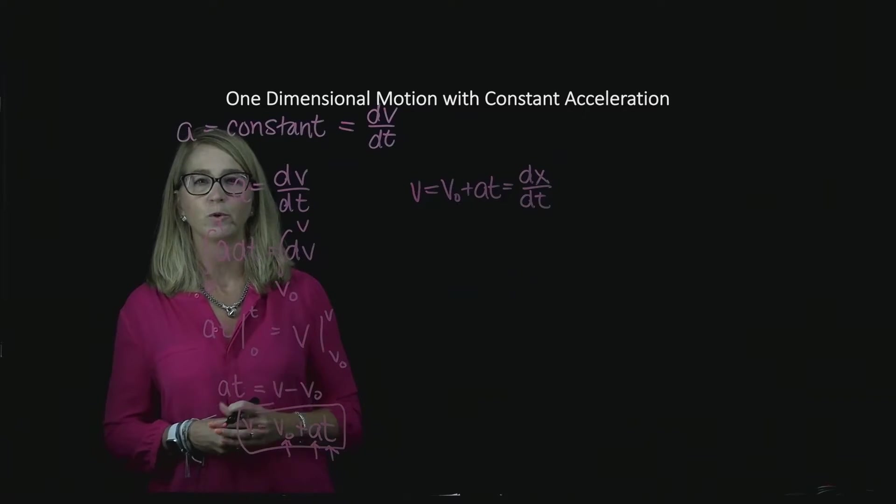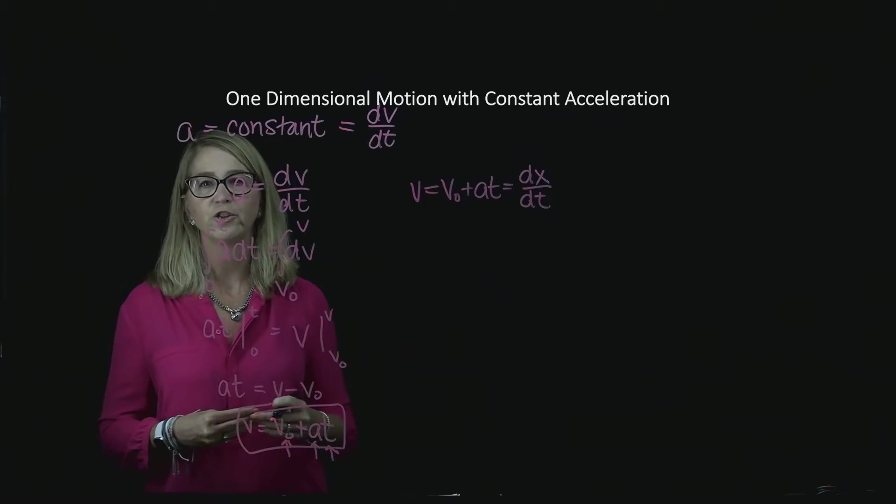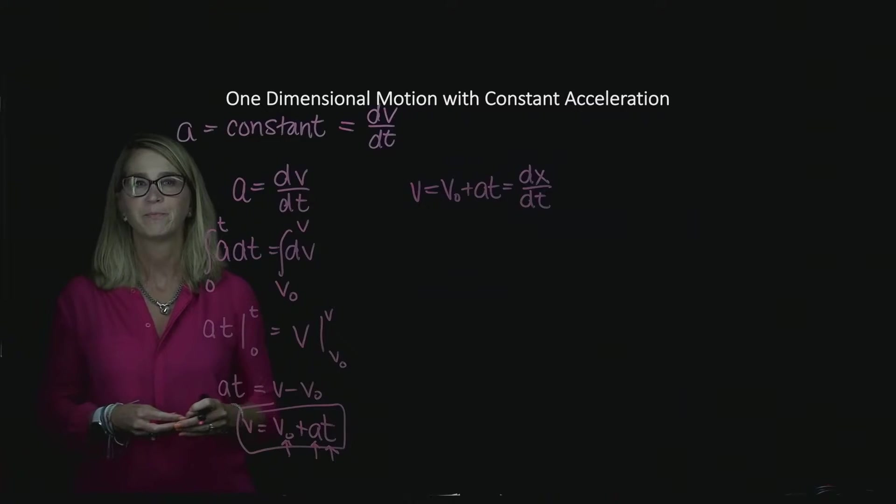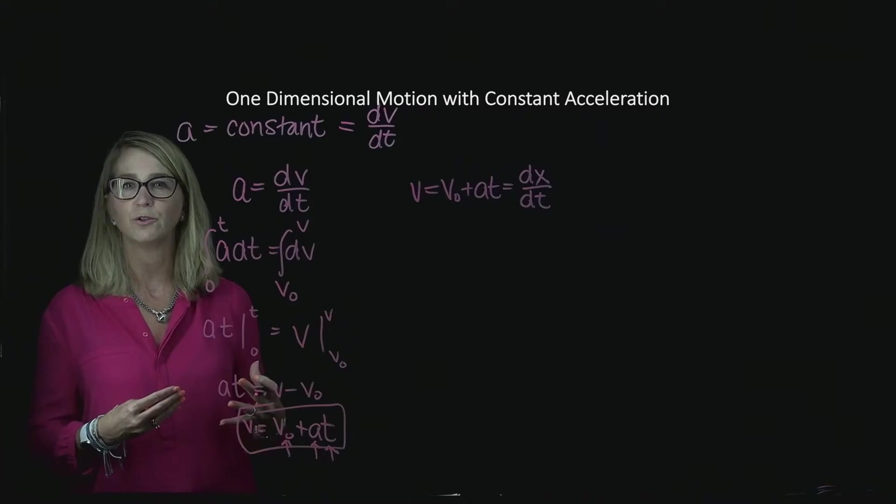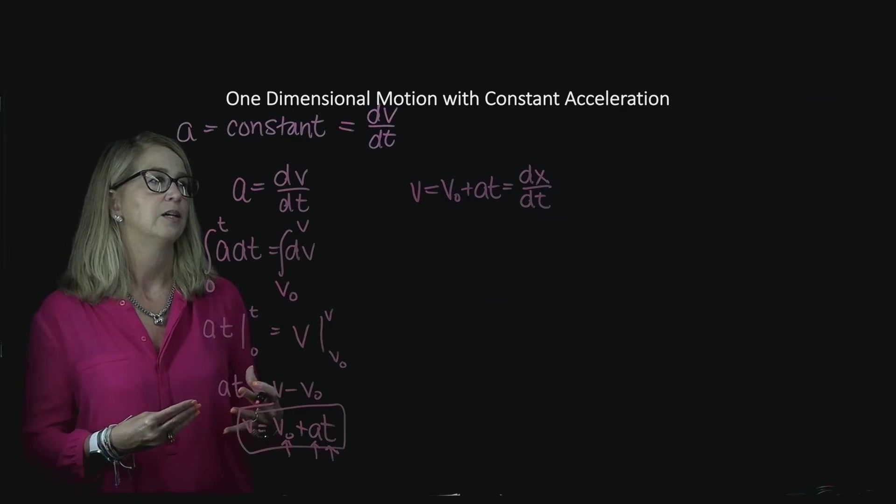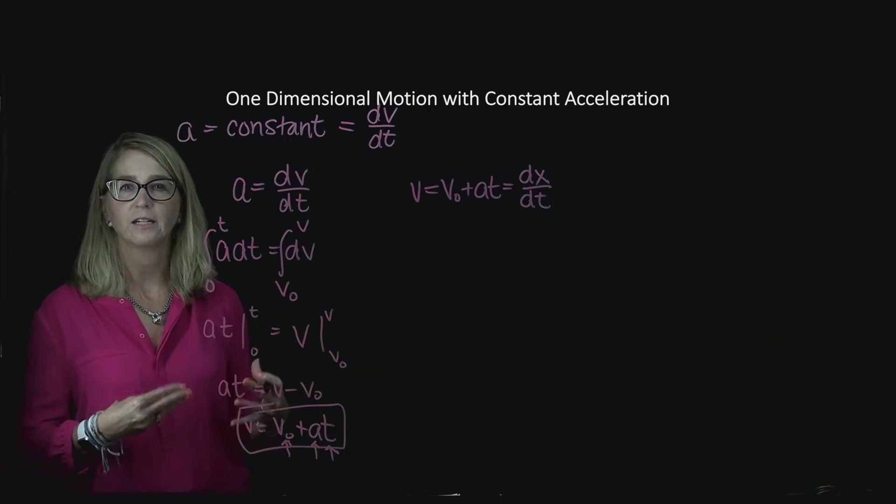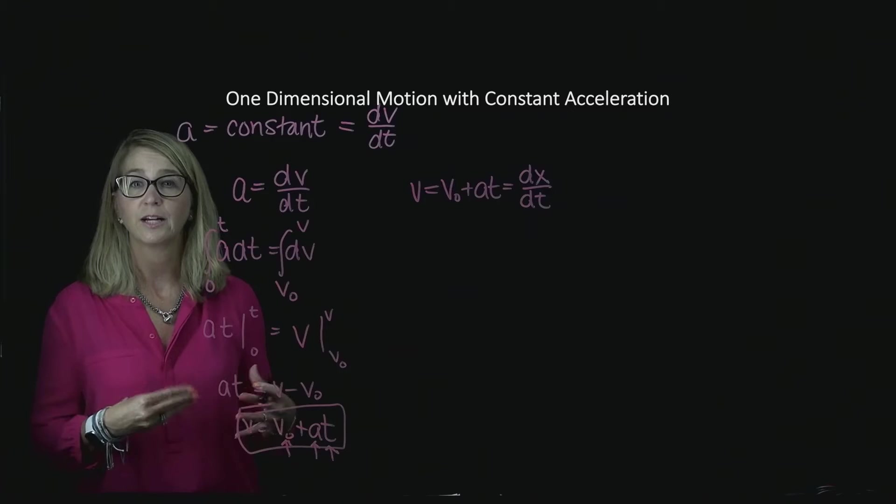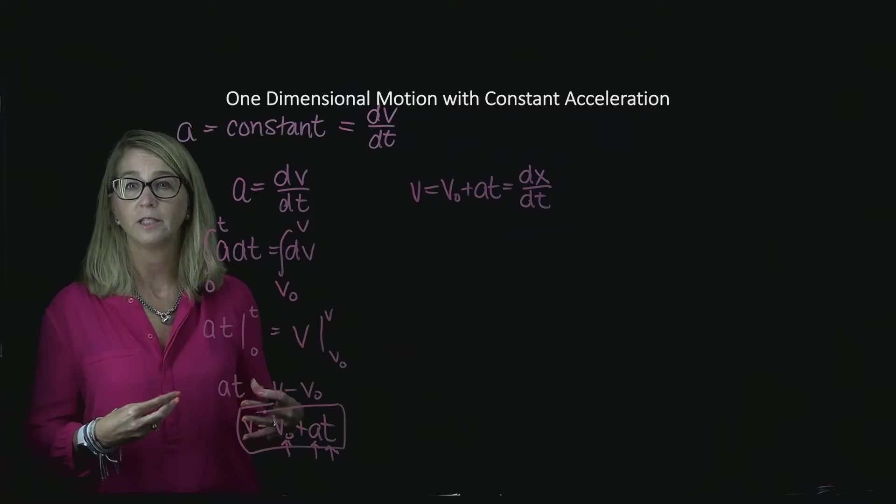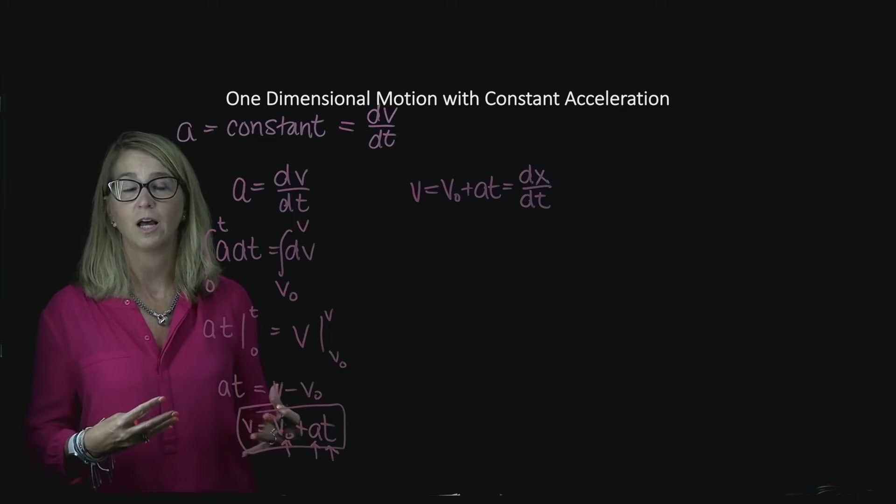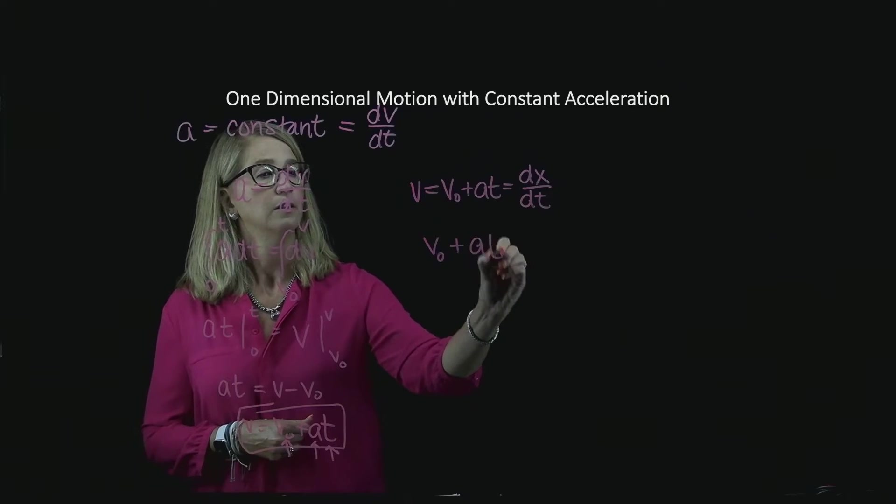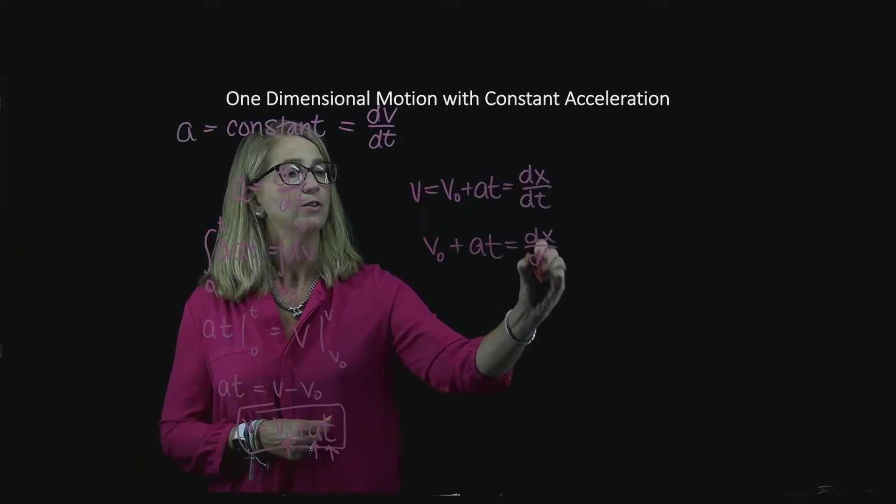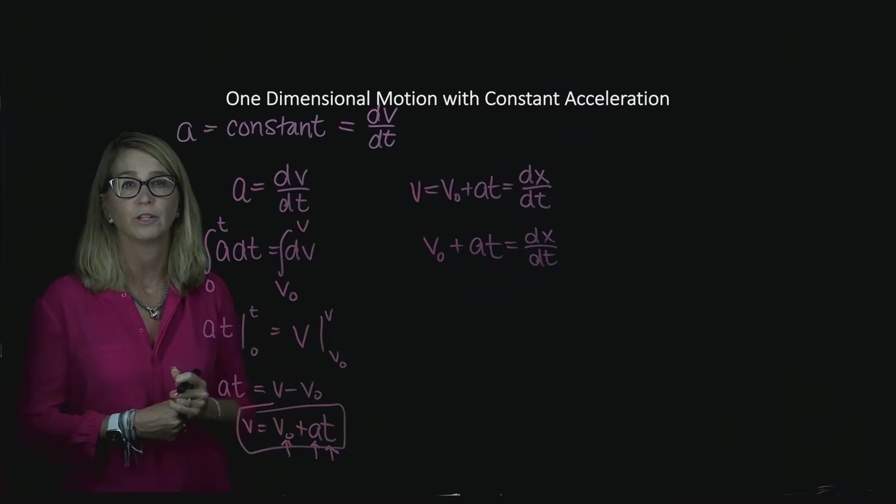Now we're going to use that and find v is v naught plus a t. And now we're going to integrate one more time, because we know the definition of velocity is its dx dt. So dx dt is the definition of velocity. And once again, I'm going to rearrange my expressions and integrate so that I can come up with an expression. What I'm going to get is x as a function of time, which is basically the position of the object at some time t, similarly to how we found the expression for velocity at some time t.